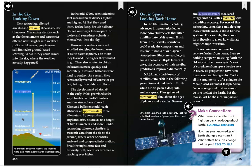Sensors and supercomputers measured things such as Earth's diameter with incredible accuracy. Because of this technology, scientists could develop more reliable models about Earth's systems. For example, they could form theories to show how climate might change over time. Space missions continue to venture farther from home. Even so, nothing compares to seeing Earth the old way, with our own eyes.